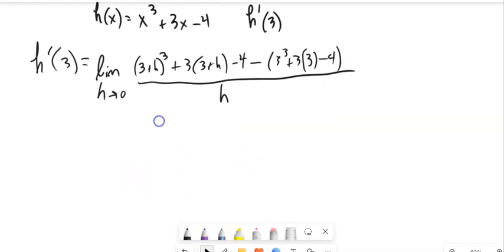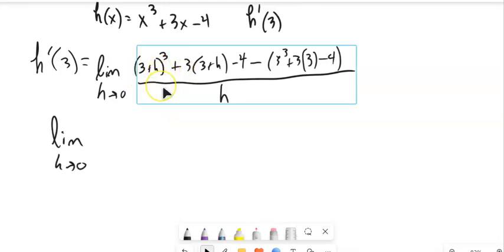So if I'm going to cube 3 plus h, you can multiply it out by hand if you want, or you know that cubic relationship. 3 cubed is 27. Same sign.